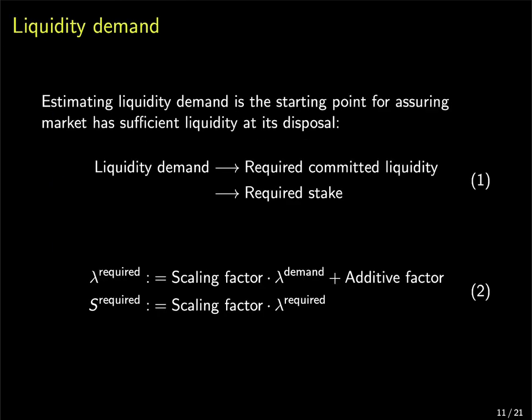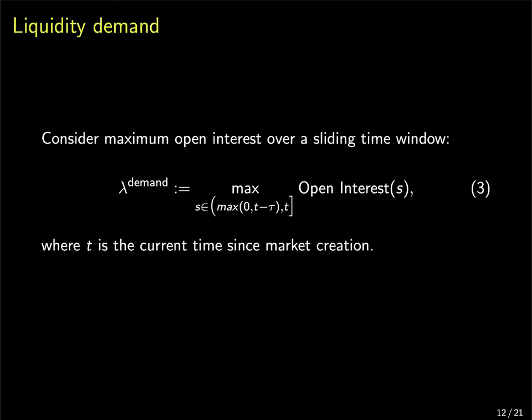Let's start discussing the details of our mechanism. In this talk I'll focus mostly on what has informed the final design of the liquidity provision at Vega that we are getting ready to roll out soon, but I do encourage you to check out the original paper where for each aspect of the mechanism we present a few competing ideas that may be more suited to other types of exchanges. The starting point for our mechanism is estimating the liquidity demand for the market. From that we can imply the total committed liquidity we need from the providers and from that the total stake required to secure that liquidity. We find that for derivatives markets, open interest provides a good estimate of the liquidity demand as it gives us a view on how many contracts are outstanding and therefore how many of them we may need to close if there are adverse market moves against some of the traders.